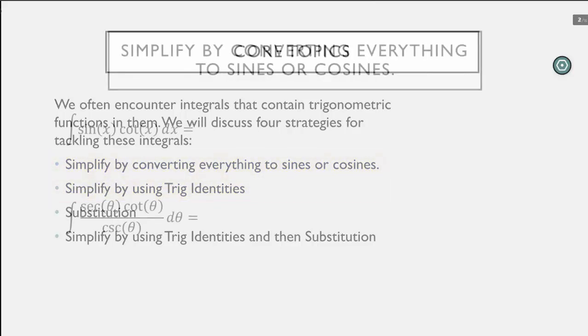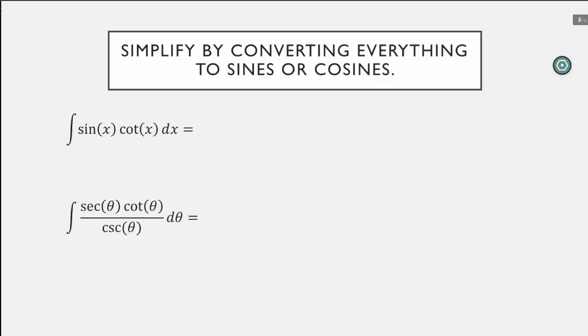Let's start with our first strategy. As the name implies we're simply going to look for any trigonometric functions inside our integrand that aren't sines or cosines and convert them. The first example: the integral of sine times cotangent. If we replace cotangent by what it's equal to, which is cosine of x divided by sine of x, we can simplify this integrand into just the integral of cosine of x and integrate it. That's an example of how converting everything to sines and cosines gives us algebraic simplification.